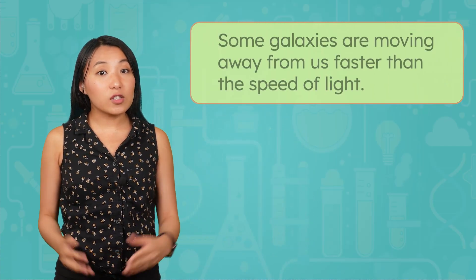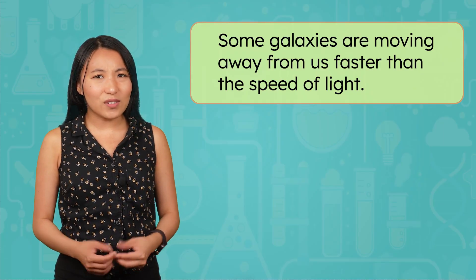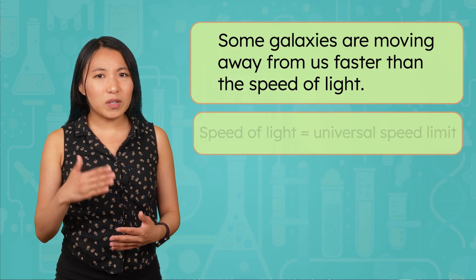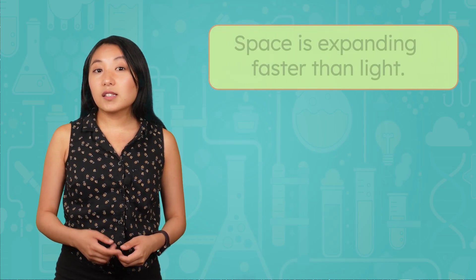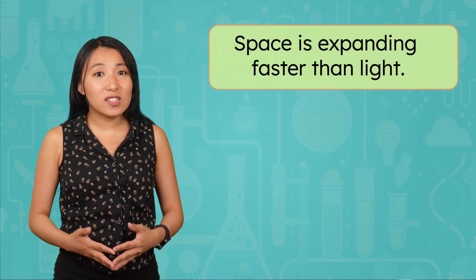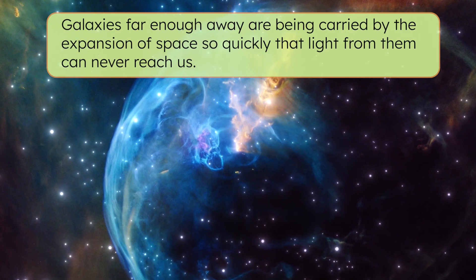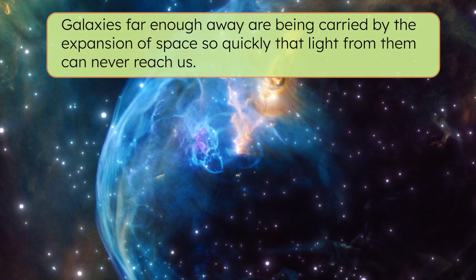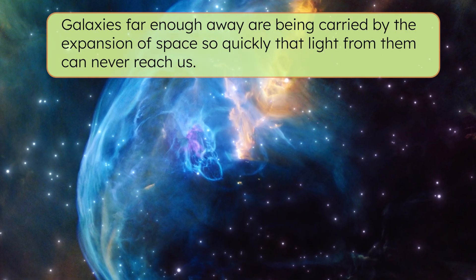At the beginning of the video, I said something that might have surprised you. That some galaxies are moving away from us faster than the speed of light. That still sounds like it breaks the laws of physics, right? After all, isn't the speed of light the universal speed limit? Here's the key. Nothing is actually traveling through space faster than light. Instead, space itself is expanding faster than light, and there's no speed limit on how fast space can stretch. Galaxies far enough away are being carried by the expansion of space so quickly that light from them can never reach us. This is why some regions of the universe are simply too far away for us to ever be able to observe.